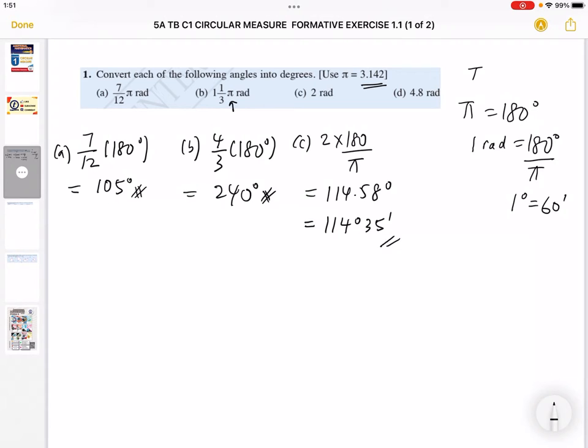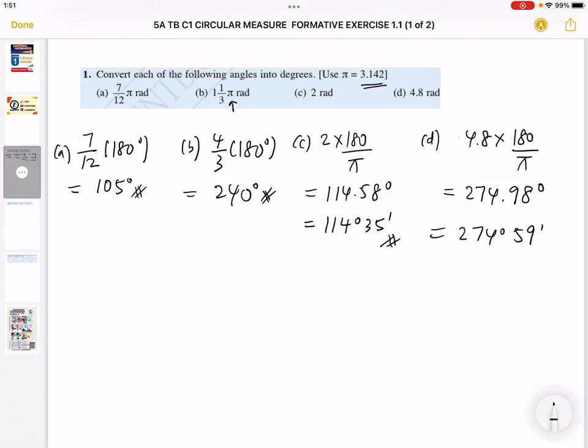Next I'm going to do part d. Over here we have 4.8 radians. So you basically multiply 180 divided by pi. Use your calculator, pi is 3.142, so you get 274.98. That is in degrees up to two decimal places. But if we change to degrees and minutes, you will get 274 degrees 59 minutes.